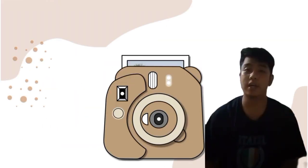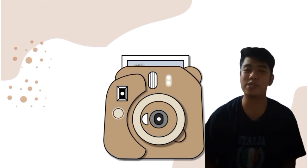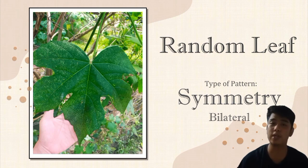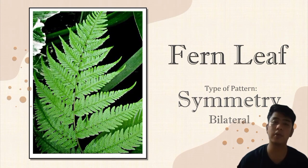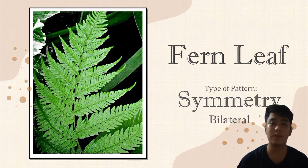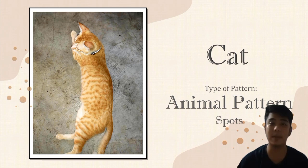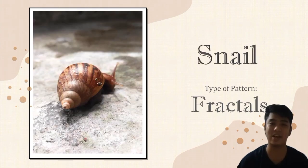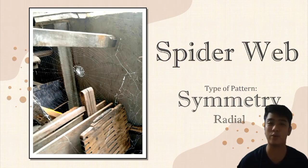Hello, I'm Japheth Rommel G. Palinas Jr., and here are my five photos that depict patterns in nature. The first one is just a random leaf, and the next is a fern leaf — both fall under the bilateral symmetry pattern. The third one is my cat, which shows an animal pattern or spots pattern. Next is a snail shell, which is a fractal pattern. And the last one is a spider web, which is an example of radial symmetry.